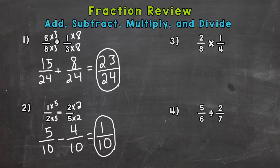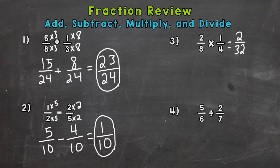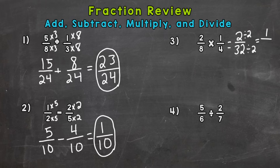Number 3: multiplying fractions. With multiplying fractions, we do not need a common denominator — you actually just multiply straight across. You go numerator times numerator and denominator times denominator. So 2 times 1 is 2, and 8 times 4 is 32. Now this fraction can be simplified — there's a common factor between 2 and 32, which is 2. So I can divide both by 2 to get the equivalent fraction in simplest form: 2 divided by 2 is 1, and 32 divided by 2 is 16. So our simplest form answer is 1 sixteenth.